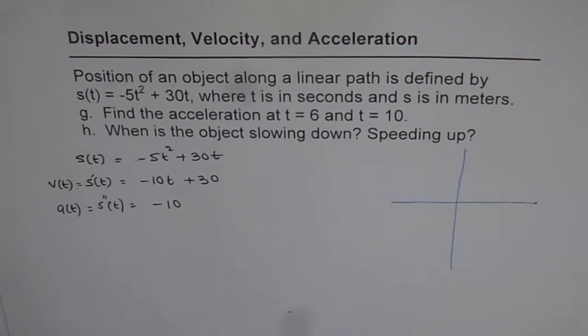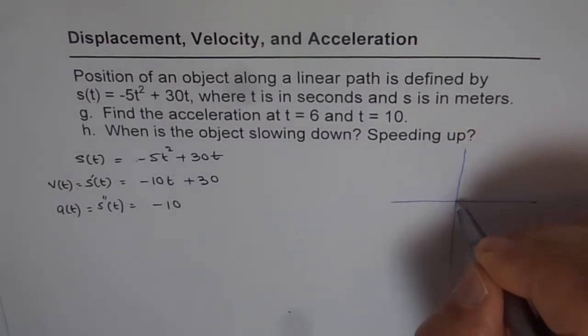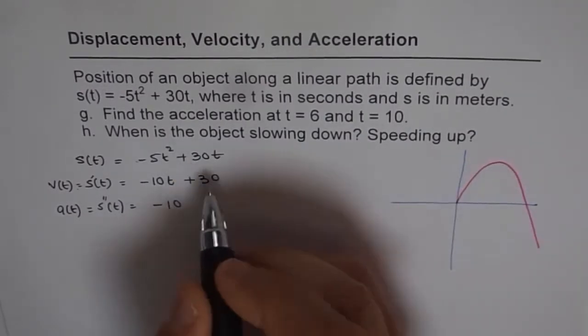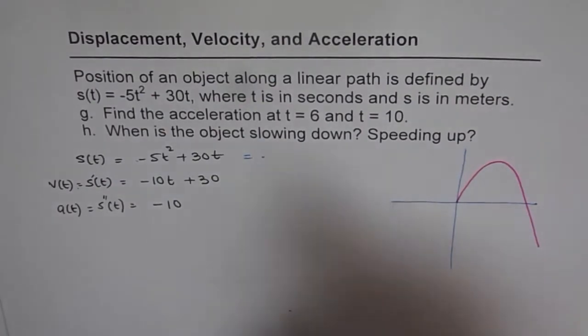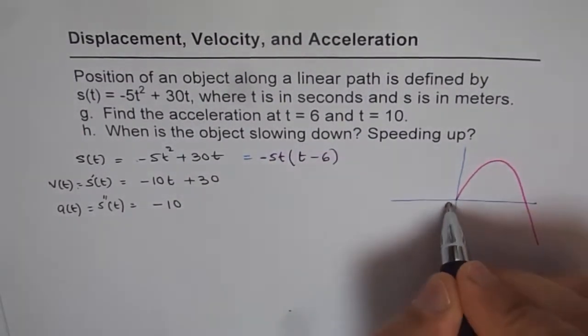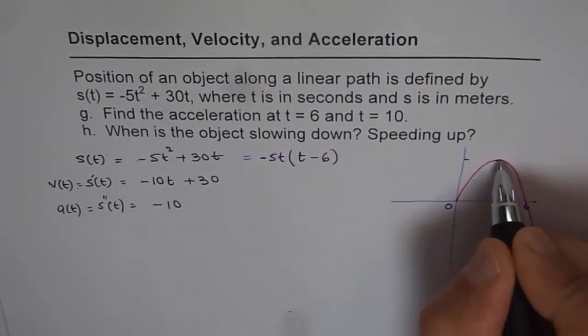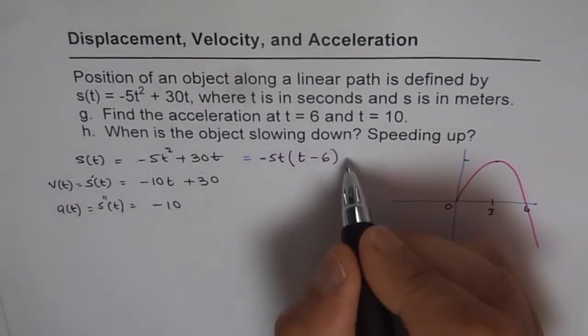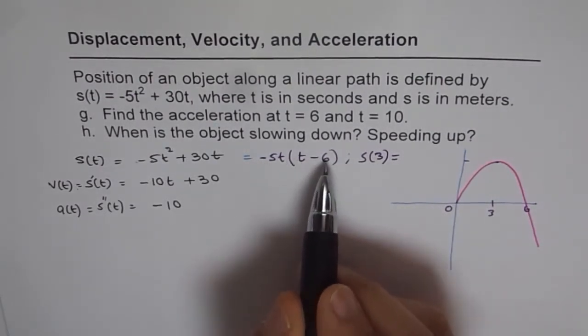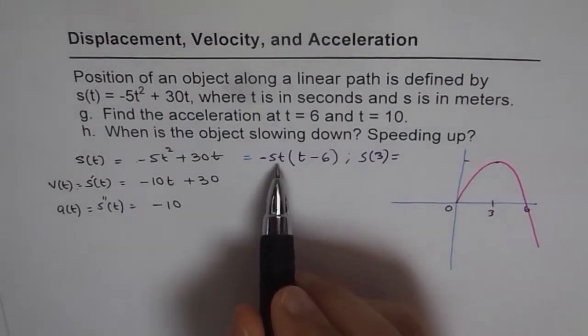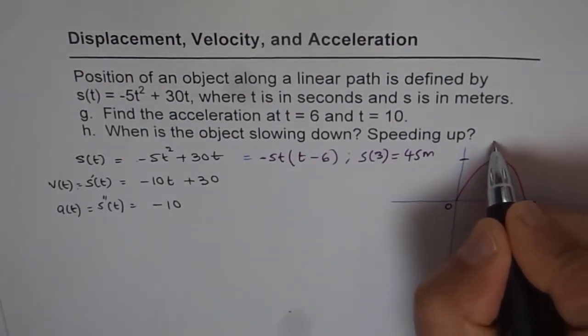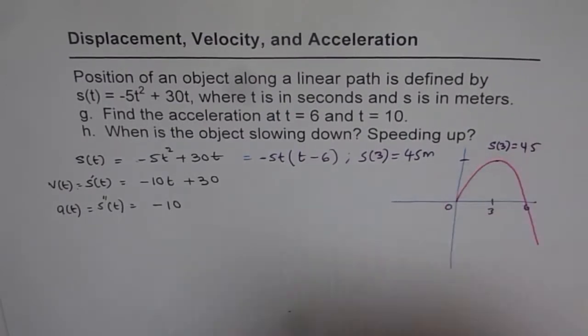Now, s(t), let me sketch it very fast. We worked out it was a graph like this. If we factor this, it's -5t as a common factor, so we're left with t - 6. This point is 0, and that is 6. We had a maximum at t = 3, and the value was s(3). When I put in 3 here: -15 times -6 gives me 45 meters. So s(3) = 45.